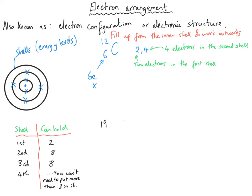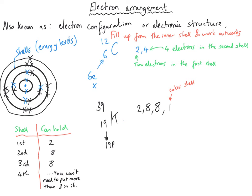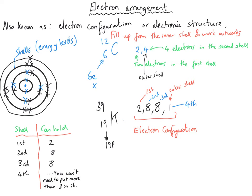For potassium with 19 electrons: two go in the first shell, eight in the second, and then eight in the third. Two plus eight plus eight is 18, so we still need one more in the outer shell. The electron configuration for potassium is 2,8,8,1 — two in the first, eight in the second, eight in the third, and one in the fourth shell. The fourth shell is potassium's outer shell. For carbon, the second shell was the outer shell with four electrons in it.